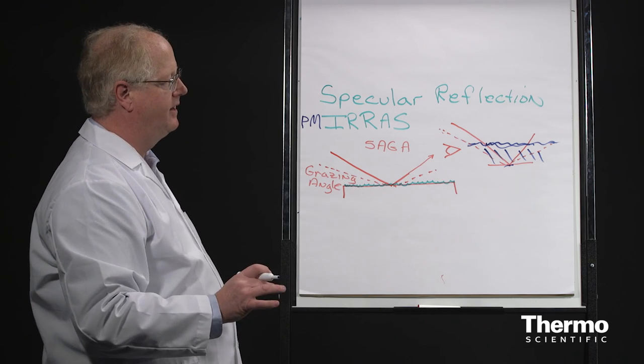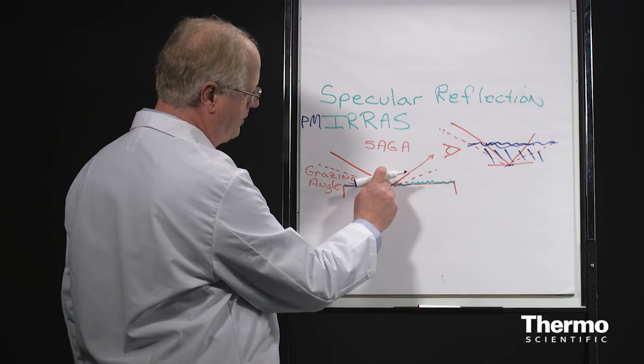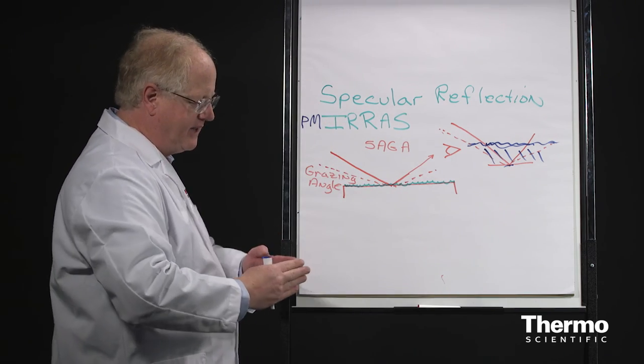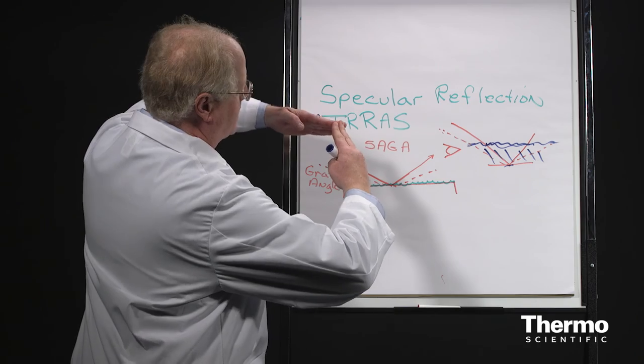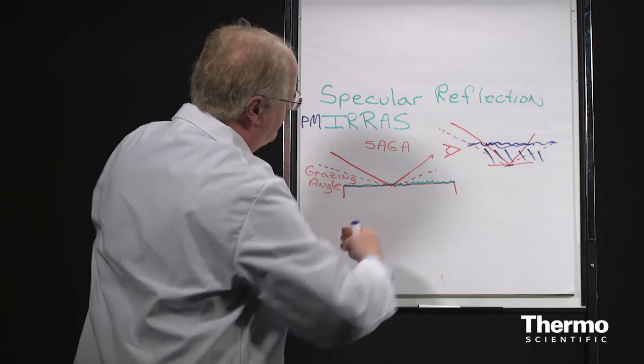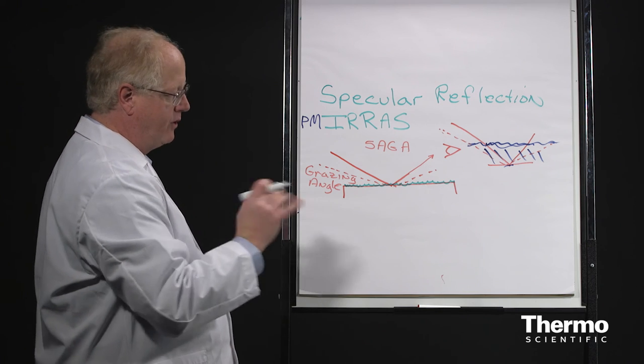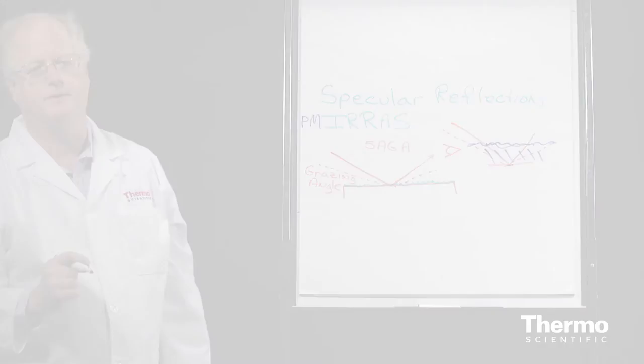So that's the idea of specular reflection. Thin film on a surface, the beam comes in at a grazing angle, and the steeper that angle is, the steeper you are relative to that surface, the more of the sample you're seeing. So now let's go in the lab and look at a few samples.